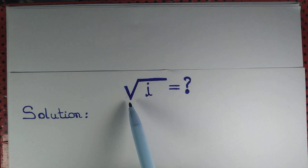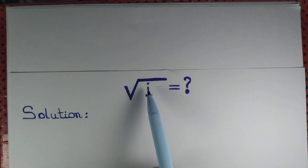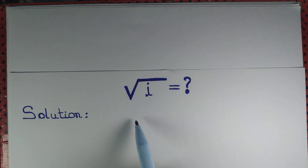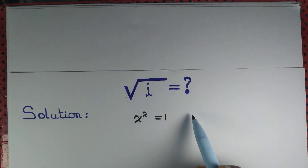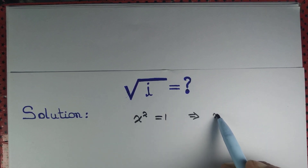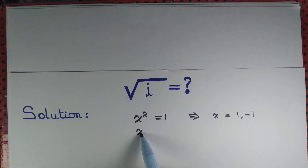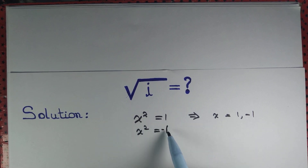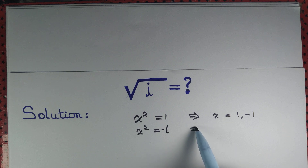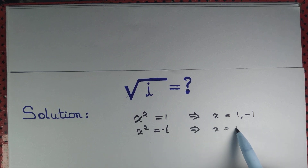Let us find the value of square root of i. If we solve the equation x² = 1, we get x = 1, −1. If we solve the equation x² = −1, we get x = i, −i.